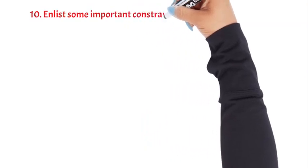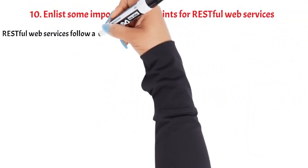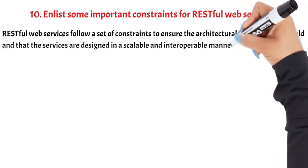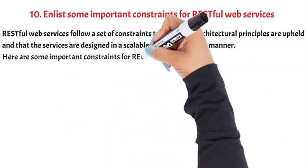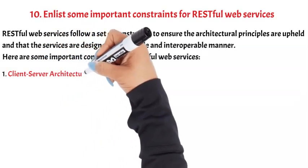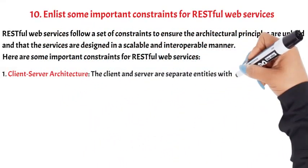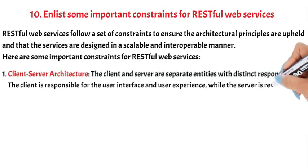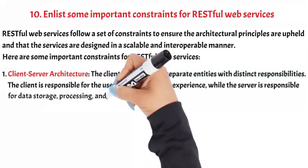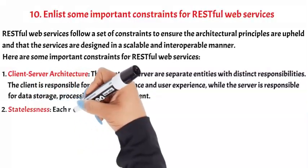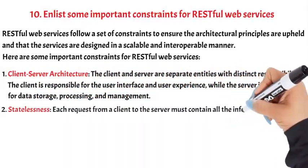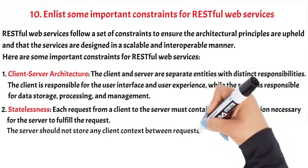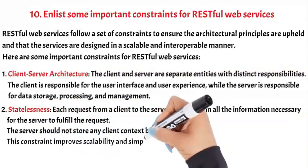Question 10: Enlist some important constraints for RESTful Web Services. RESTful Web Services follow a set of constraints to ensure the architectural principles are upheld and that the services are designed in a scalable and interoperable manner. Here are some important constraints: 1. Client-Server Architecture — the client and server are separate entities with distinct responsibilities. The client is responsible for the user interface and user experience, while the server is responsible for data storage, processing, and management. 2. Statelessness — each request from a client to the server must contain all the information necessary for the server to fulfill the request. The server should not store any client context between requests. This constraint improves scalability and simplifies the design.